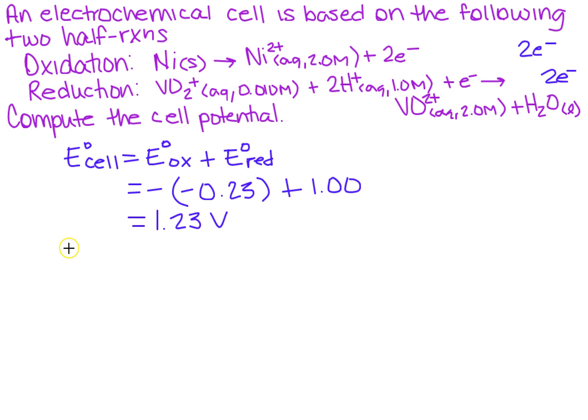But it says it wants the cell potential. Well that's the Nernst equation, and what does it say? Well it says the cell potential is equal to the E naught of the cell minus 0.0592 over the number of moles of electrons times the log of Q.